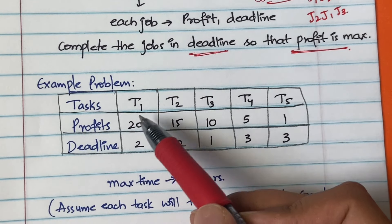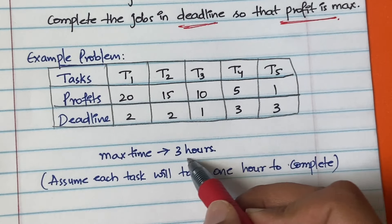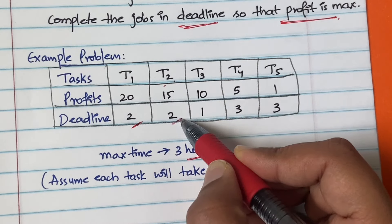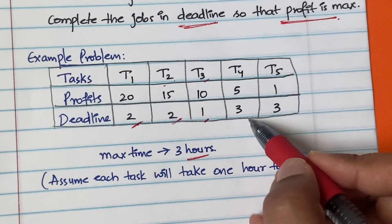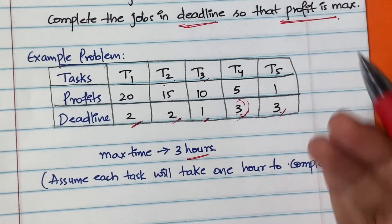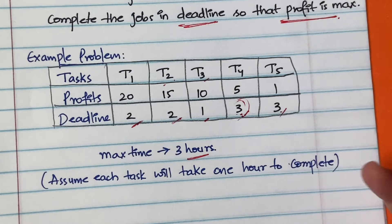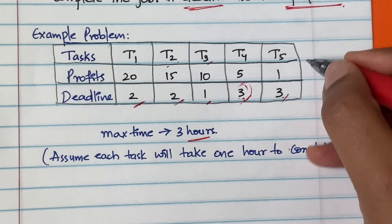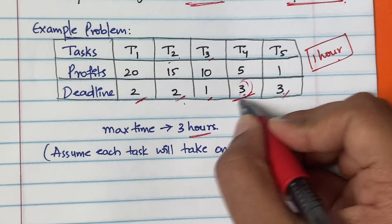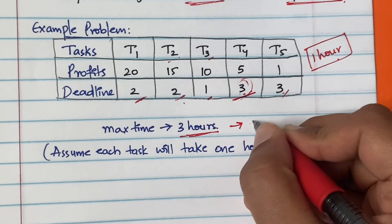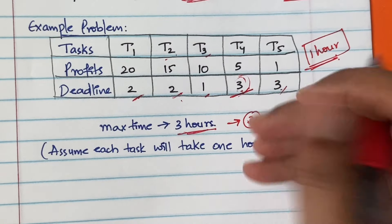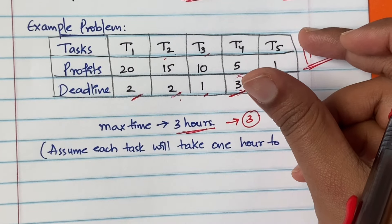In Example 1 we have five tasks with their profits and deadlines. The maximum time is three hours because the maximum deadline across all tasks is three hours — t1 and t2 have deadline two hours, t3 has deadline one hour, and t4 and t5 have deadline three hours. Since each task takes one hour to complete, you can complete at most three tasks. You must decide which three tasks to pick to maximize profit.